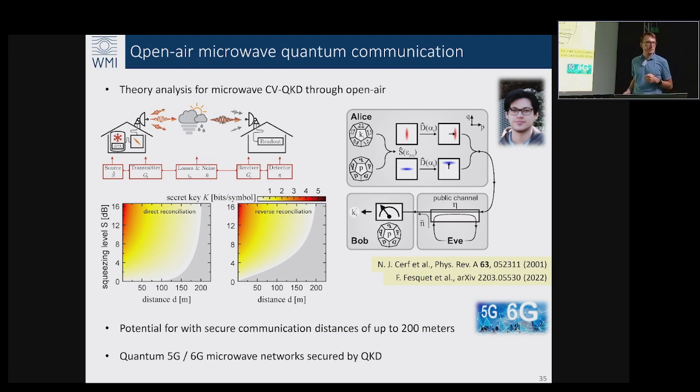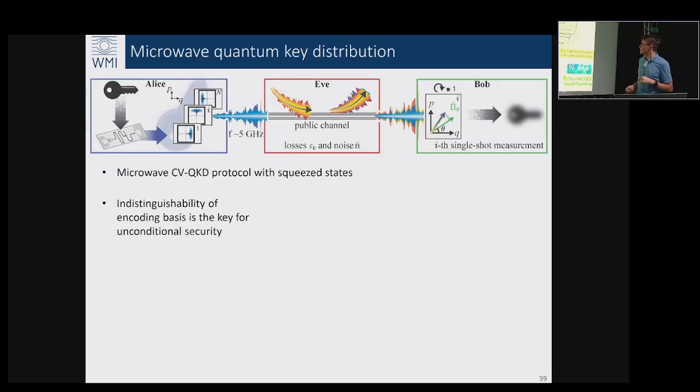We thought that there is some potential - maybe it's not kilometers but this is definitely something useful and compatible with 5G which actually has the same distance requirement between the base stations around 200 meters. This is why at some point I applied and received MCQST funding to buy some FPGA device which allowed us to kick start these experimental activities which I can now report to you.